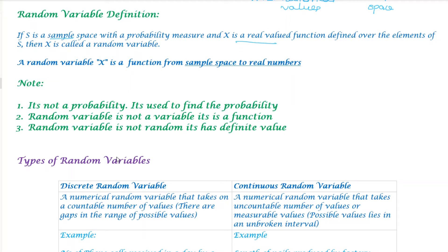We have a sample space, and this is a real-valued function — a mathematical function relating the sample space to real numbers. It is used to find the probability: if x equals 0, it is a probability; if x equals 1, it is a probability; if x equals 2, it is a probability. Note: a random variable is not a variable — it is a function. And a random variable is not random — it has a definite value.